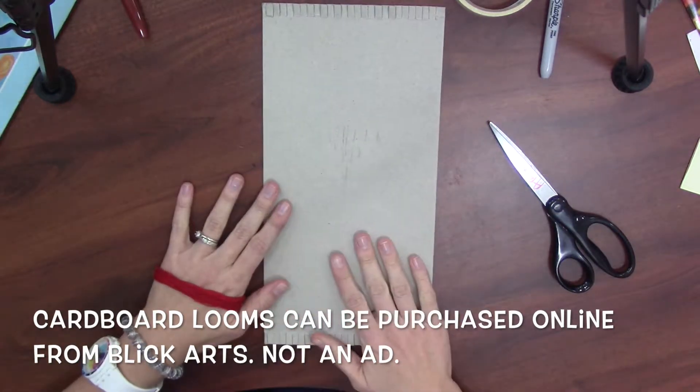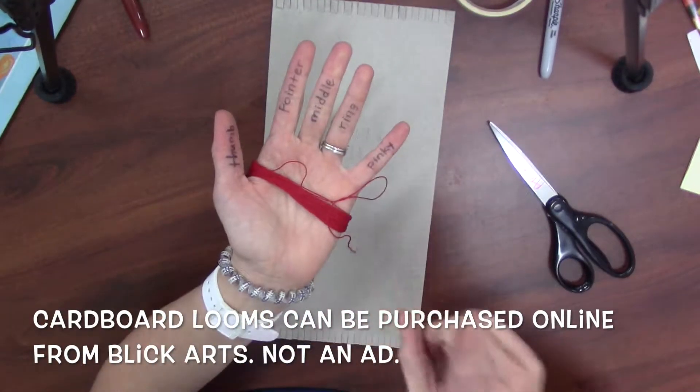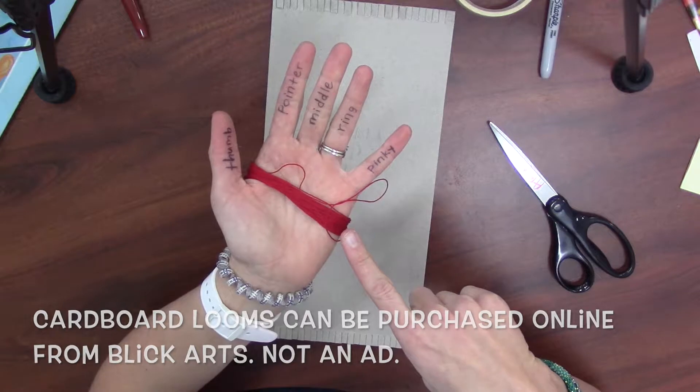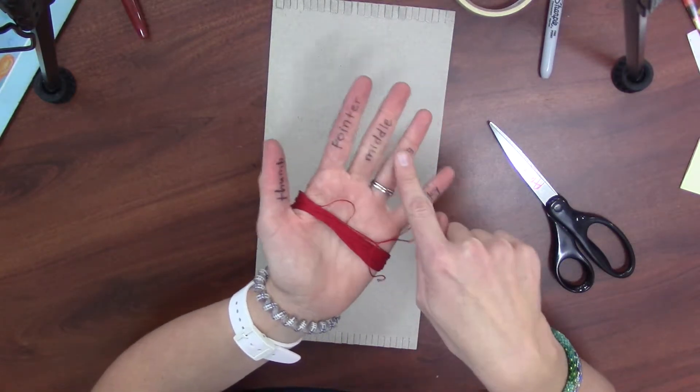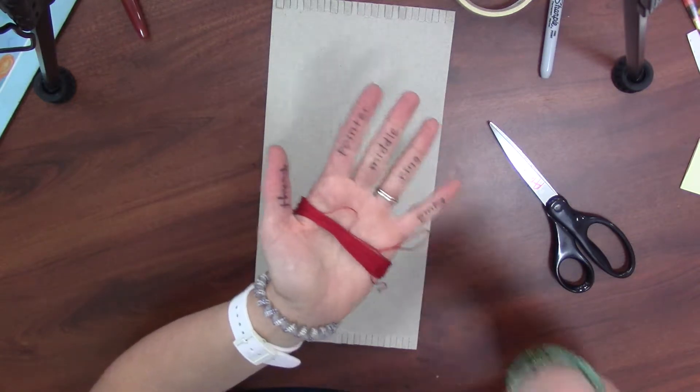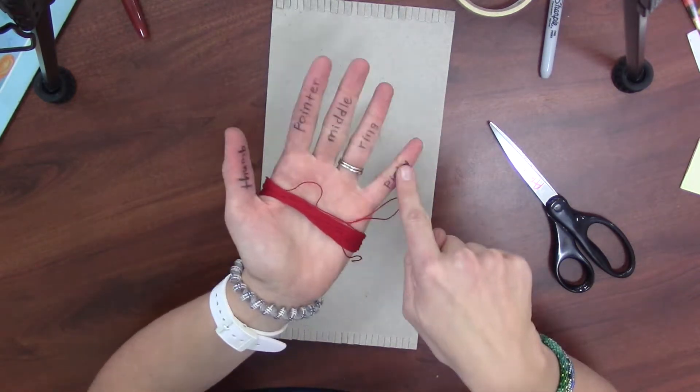I'm going to turn my loom over and now Ms. Harden will show you how to measure your string. Yes, these are labels that I had on my hand from the other class, from second grade finger weaving you might remember. That's not for us.